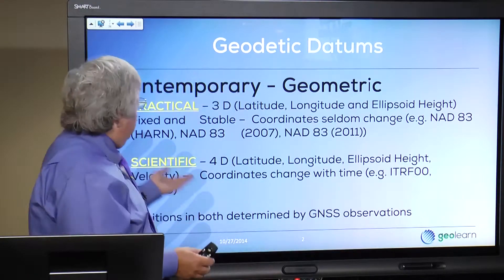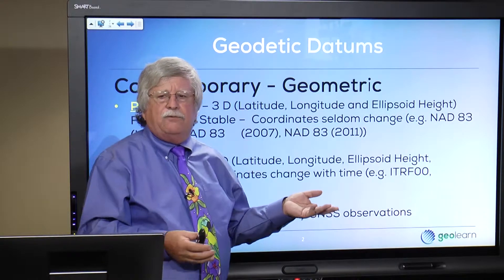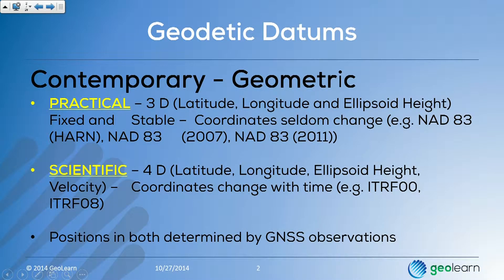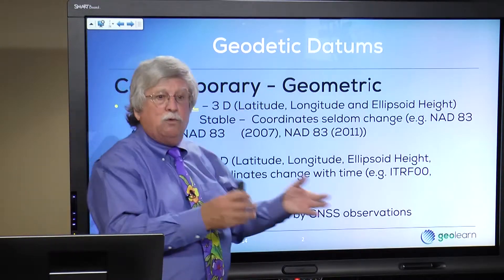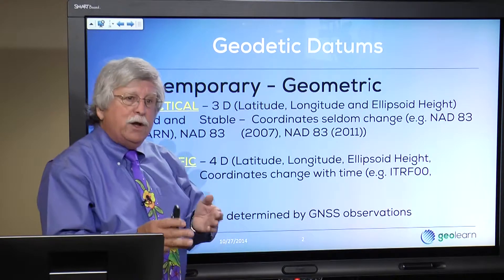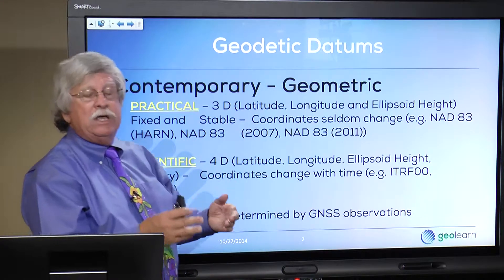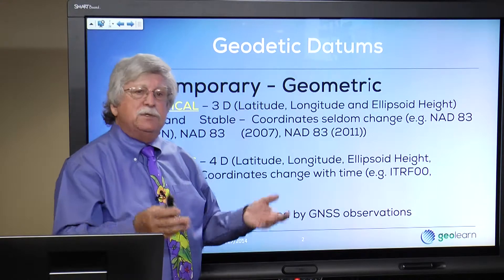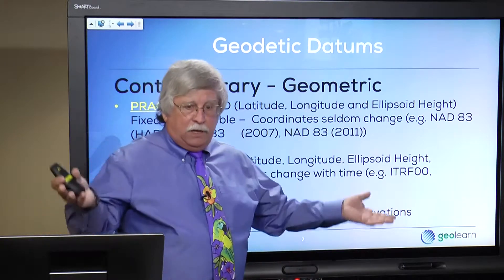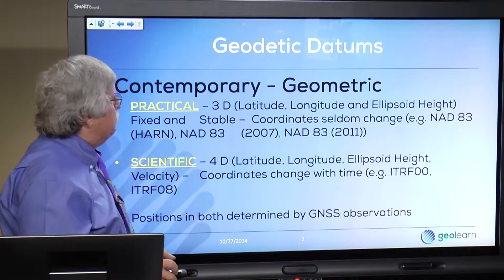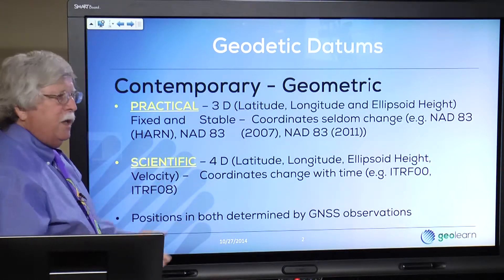We can also deliver what we might refer to as a scientific reference frame — again latitude, longitude, and ellipsoid height, but now with the added component of velocity. There are many people in the scientific community — geophysicists, geologists, geodesists, and others — who don't care about keeping coordinates stable; they want to know how much things are moving. Through one box — a GPS or GNSS Continuously Operating Reference Station, or CORS — you can easily deliver both sets of coordinates to the user so they can decide what they want to use.